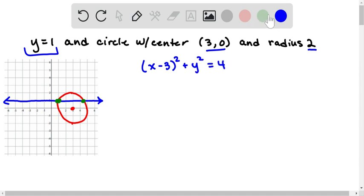And now we know that these points have a y coordinate of 1, so we can substitute 1 in for y. So (x - 3)² + 1² = 4, and let's solve this equation.